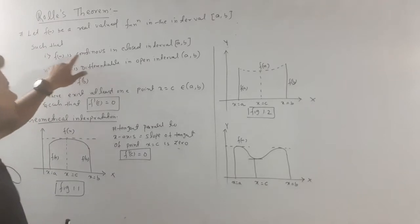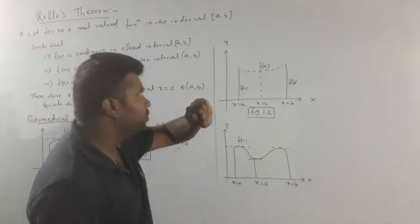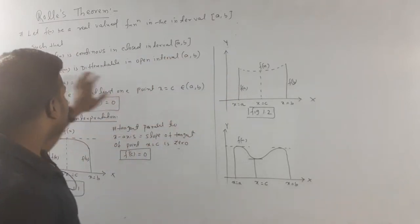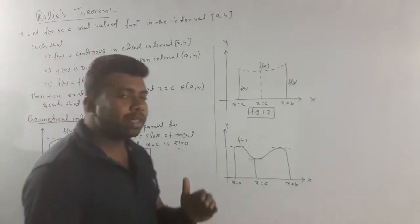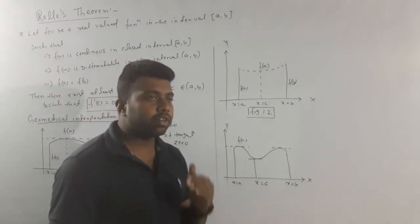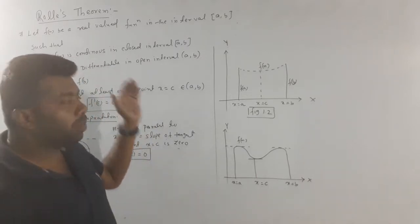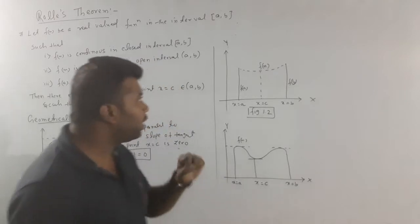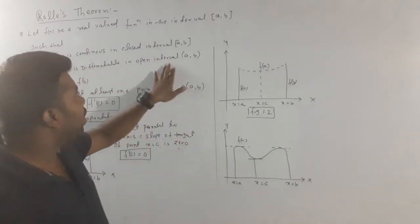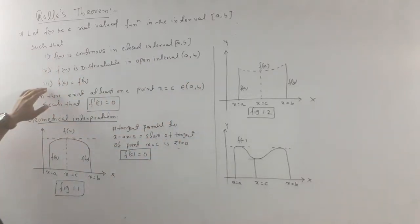First point: f of x is continuous in the closed interval a, b. Second point: f of x is differentiable — differentiable means at each point we have a derivative, we have a tangent — in the open interval a, b. And third point: f of a is equal to f of b.